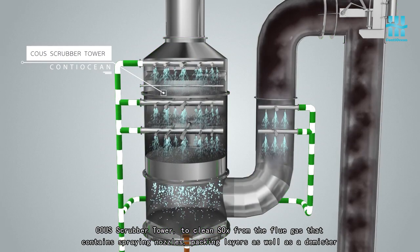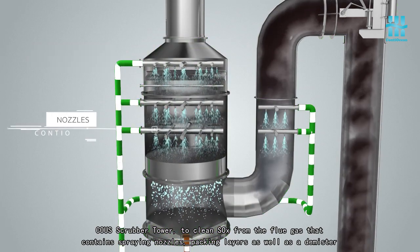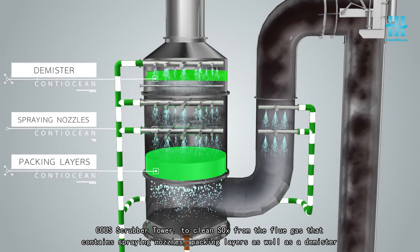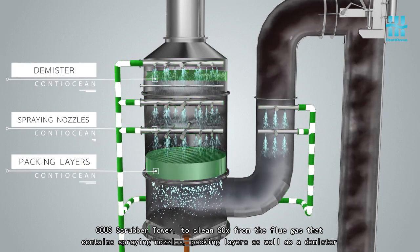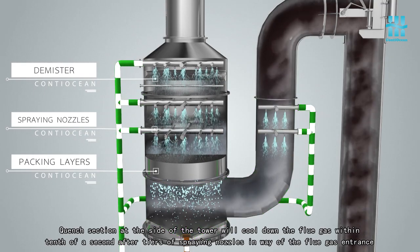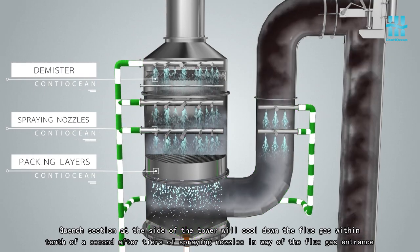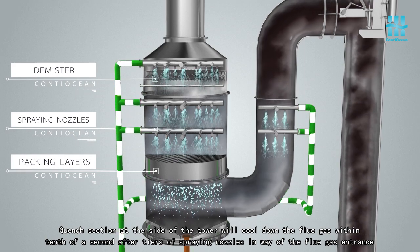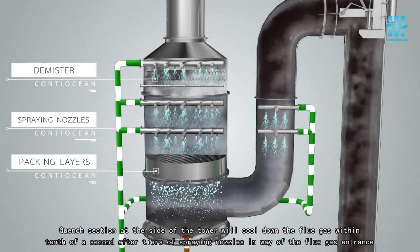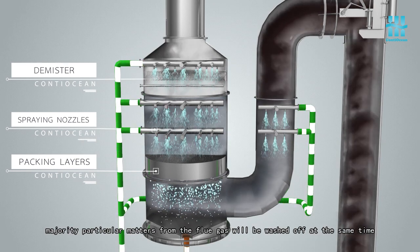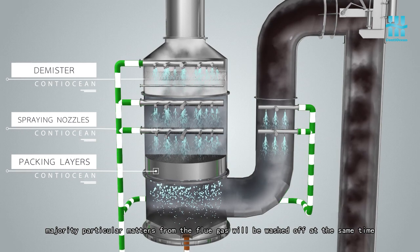Koyu's scrubber tower to clean SOx from the flue gas contains spraying nozzles, packing layers, as well as a demister. Quench section at the side of the tower will cool down the flue gas within tenth of a second after tiers of spraying nozzles in way of the flue gas entrance. Majority particular matters from the flue gas will be washed off at the same time.